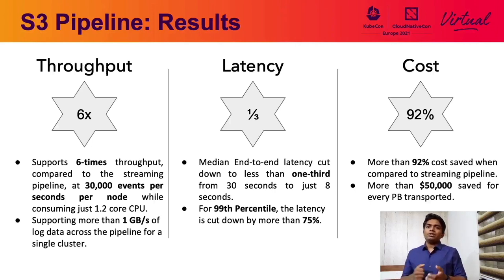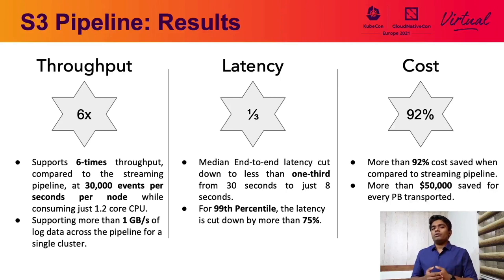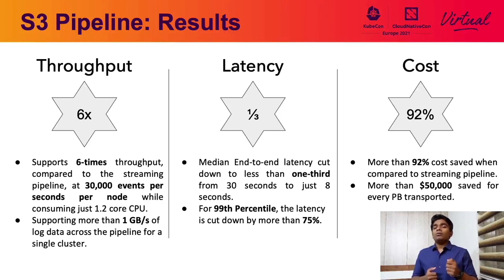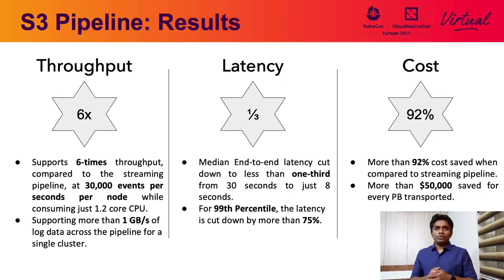Let me give a summary of the improvements of this S3-based pipeline over the streaming pipeline. In terms of throughput, we saw a massive six times jump from 5,000 events per second per node to 30,000 events per second per node. We have also tested transporting over one gigabyte per second from a single Kubernetes cluster. The median end-to-end latency drops to less than one-third, from around 30 seconds in the streaming pipeline to just over 8 seconds in the S3-based pipeline. The difference grows considerably at the 99th percentile, with latency cut down by more than 75%. Finally, looking at cost, we see savings of more than 92% compared to the streaming pipeline, due to not having persistent resources running, compression of log data, and using transit gateway. This comes to more than $50,000 US dollars saved over every petabyte transferred. This is a story of how we were able to create a petabyte scale logging pipeline at Intuit using Fluentd and Fluentbit.